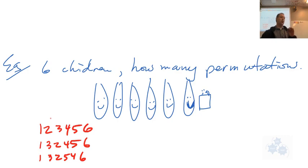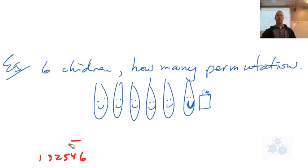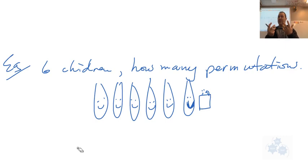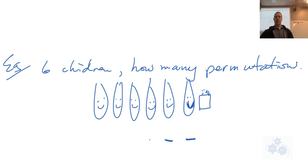We don't want to list all of them, but we want to find out how many different ways they could be arranged. Remember from last section the fundamental counting principle: if we have a certain number of ways to do a certain thing and a number of ways to do a second thing, you multiply those together. So thinking about positions in front of the water fountain, I'm going to make six spots.